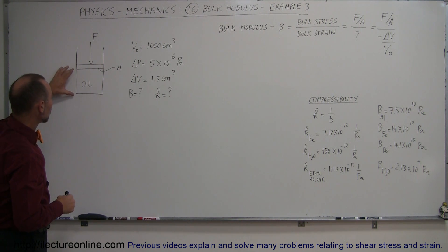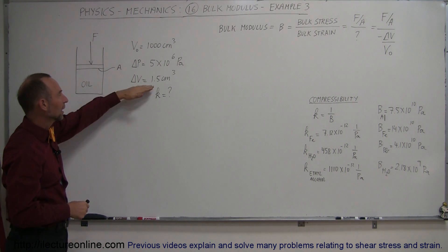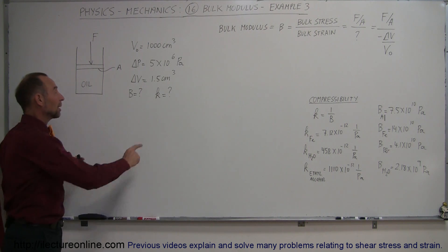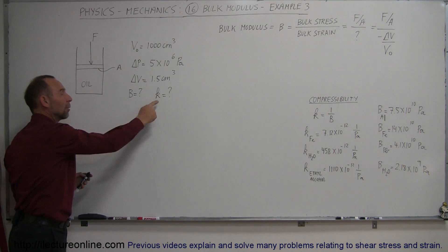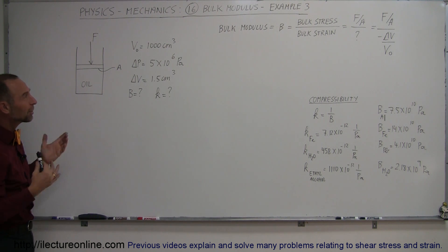That would be about 50 atmospheres, roughly speaking. And let's say we start with an original volume of 1,000 cubic centimeters. By applying this enormous amount of pressure, we reduce the volume by 1.5 cubic centimeters. From that, we should be able to figure out the bulk modulus and the compressibility of this particular oil. That's typically how we do that.